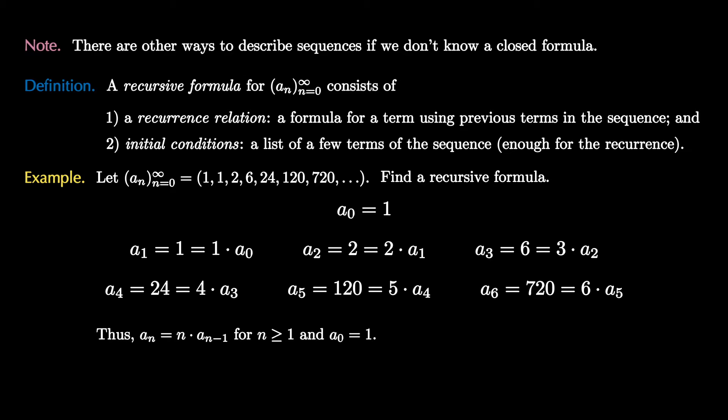From this, we believe the pattern continues so that aₙ is equal to n times aₙ₋₁, for n greater than or equal to 1. And the initial condition is that a₀ equals 1. Together with these two rules, we can build the entire sequence. We will note that we've already seen this sequence before. This is the factorial sequence, and we use the formula aₙ equals n! to represent this sequence.